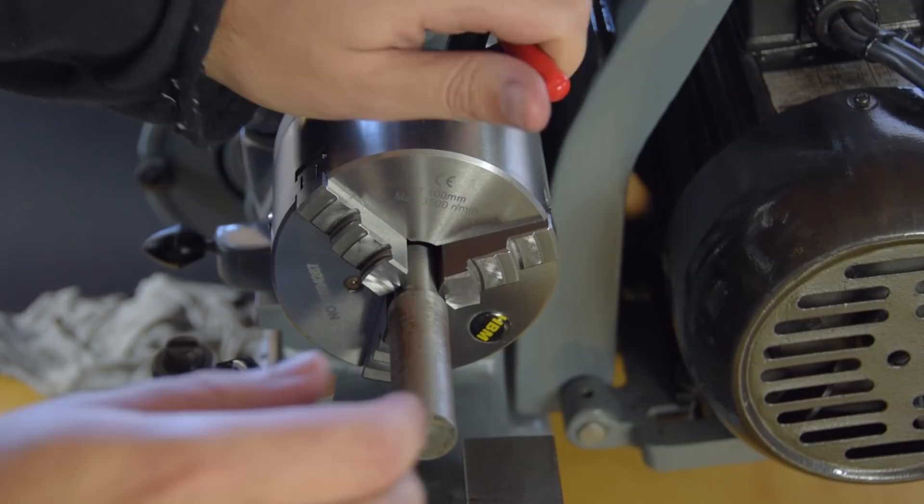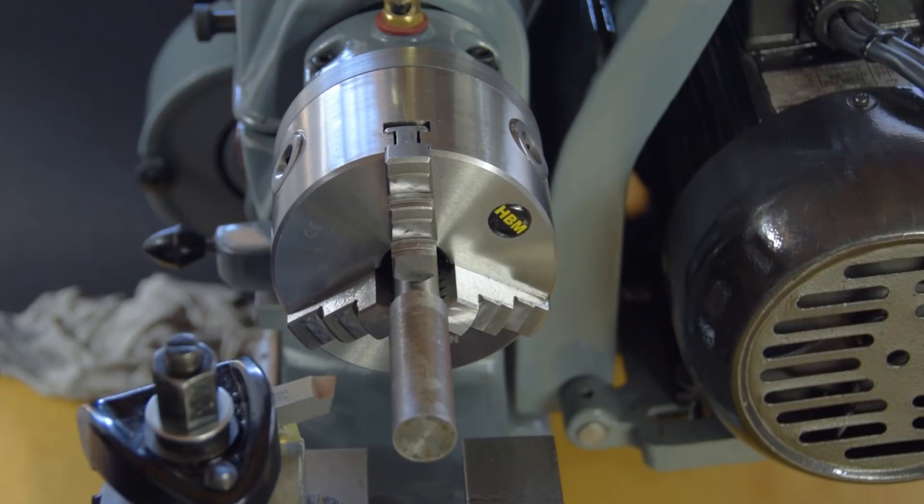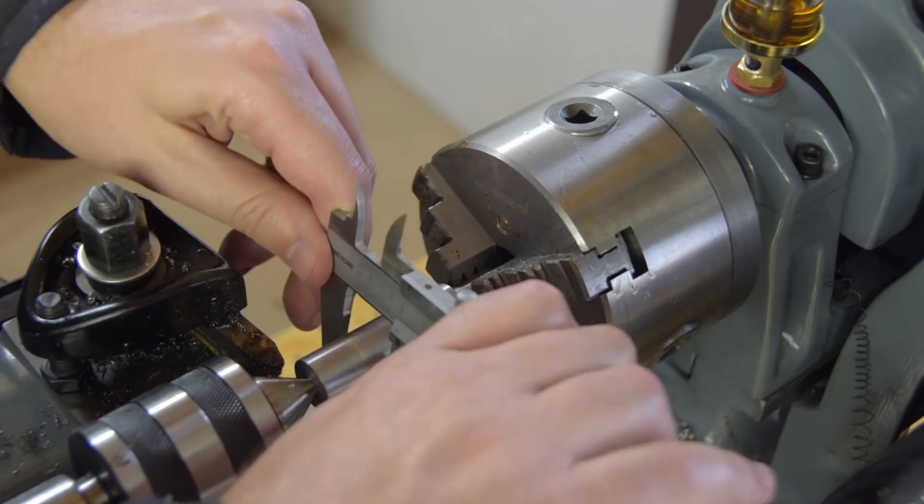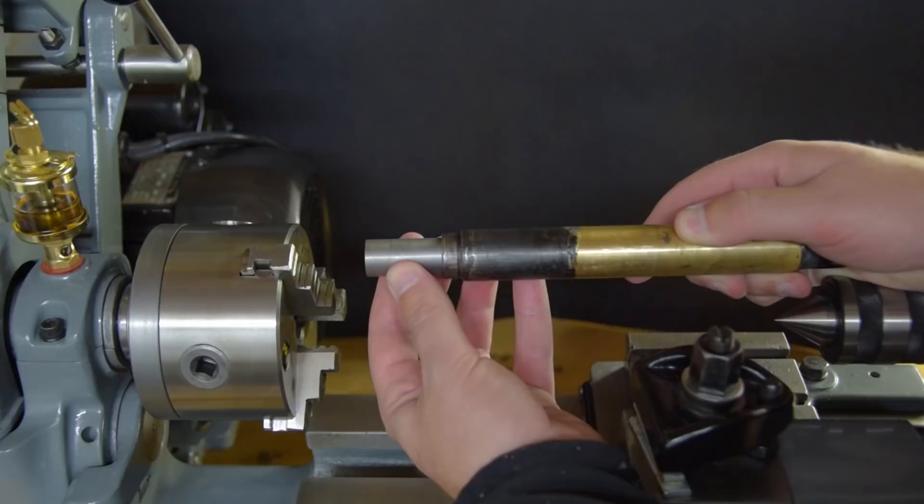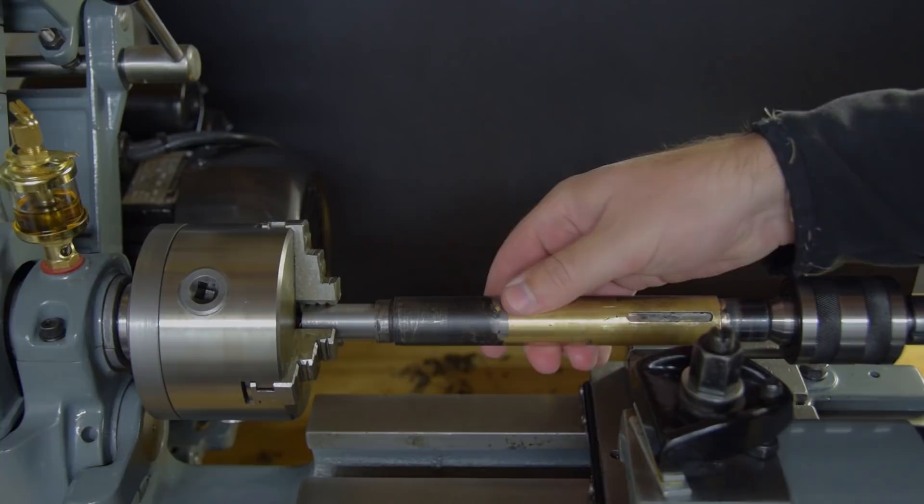My initial thought was to make a mandrel that would fit inside the sleeve and then I could turn the part between centers, confident that the outside would be concentric with the inside. Ultimately I decided that although this method could be made to work, the fact that the inside of the sleeve isn't perfect plus the extra complication of an extra part, it was likely to add up to a worse end result than just sticking the sleeve straight in the chuck.